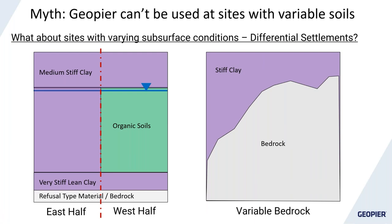GeoPeer can't be used at sites with variable soil conditions — another myth. An Ohio project had the east half of the site transition from good glacial till to organics ranging from 5 to 30 feet depth, right in the middle of the building footprint. A Tennessee project had variable bedrock depth — as shallow as 3 feet below finished floor in some areas, 15 to 20 feet in others. In both cases the concern is differential settlement, and the more abrupt the change, the higher the risk.